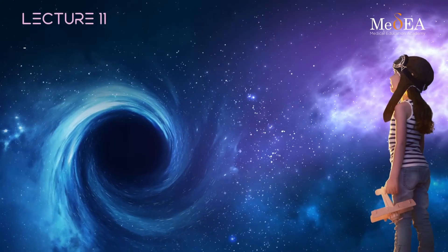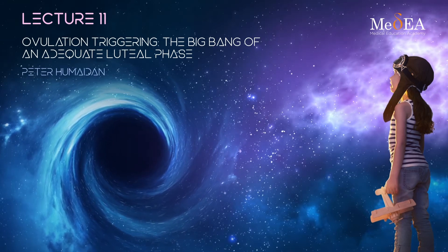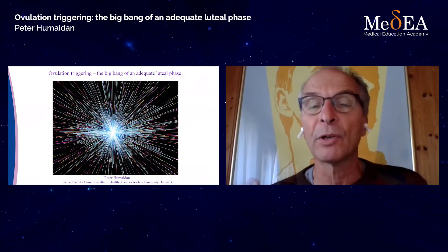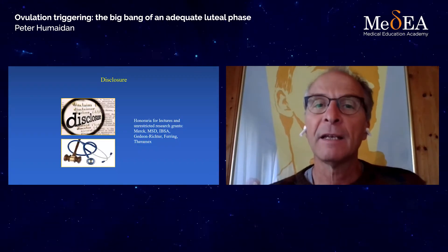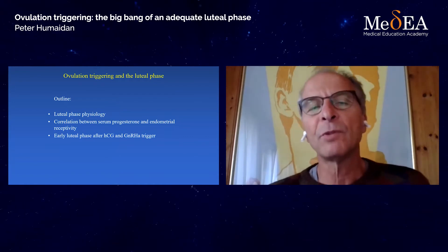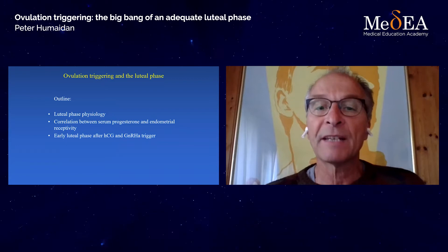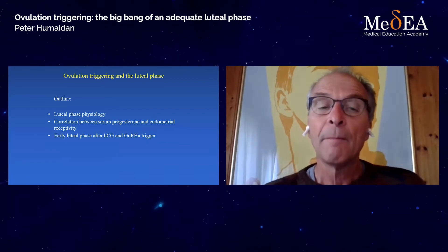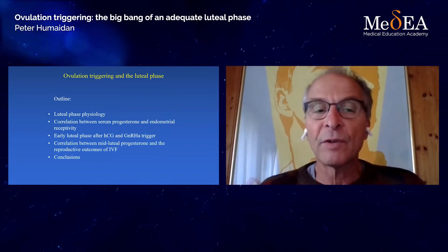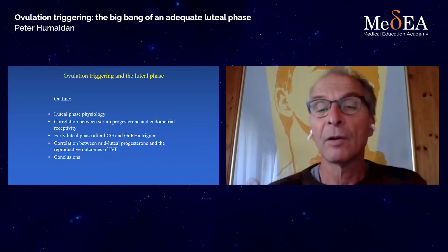Today, I sincerely hope that you will enjoy my lecture on ovulation triggering, which is an extremely important and new area of research and of great clinical importance. I'm going to give you a lecture on ovulation trigger. We call this lecture 'the big bang of an adequate luteal phase,' because this is what everything is about when we talk about ongoing pregnancies and live birth rate — the luteal phase. The outline covers luteal phase physiology, the correlation between progesterone and endometrial receptivity, the early luteal phase after HCG and agonist trigger, and the correlation between mid-luteal progesterone and reproductive outcomes.